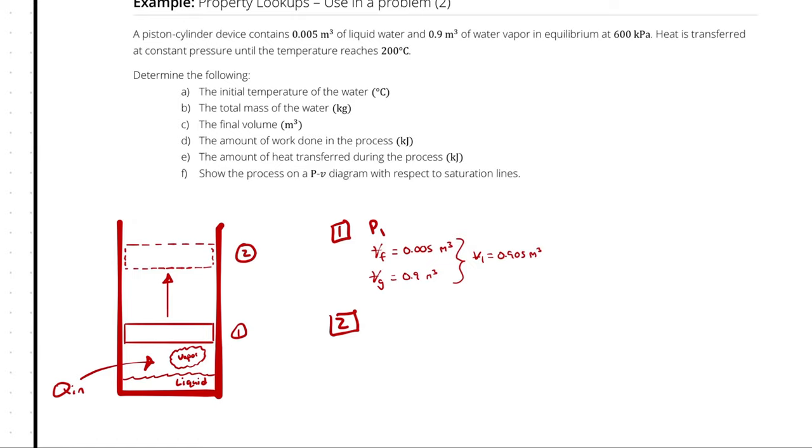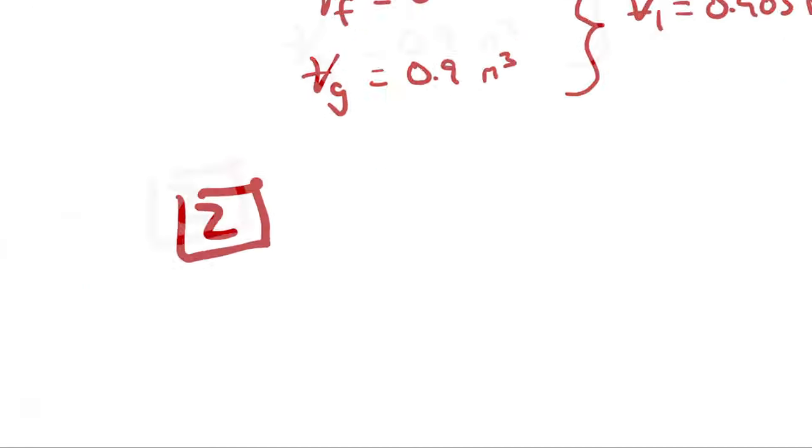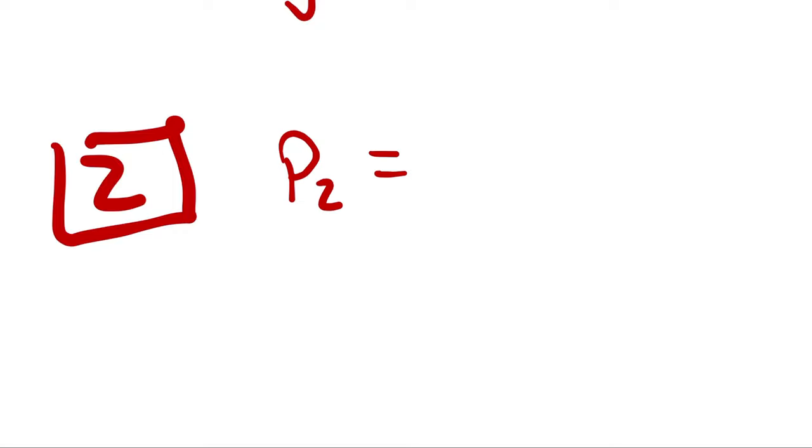At state 1 we have total volume, pressure, and we know it's at saturation conditions. At state 2, we had an isobaric process, so P2 equals P1, which is 600 kilopascals. And we know T2 is 200 degrees Celsius.